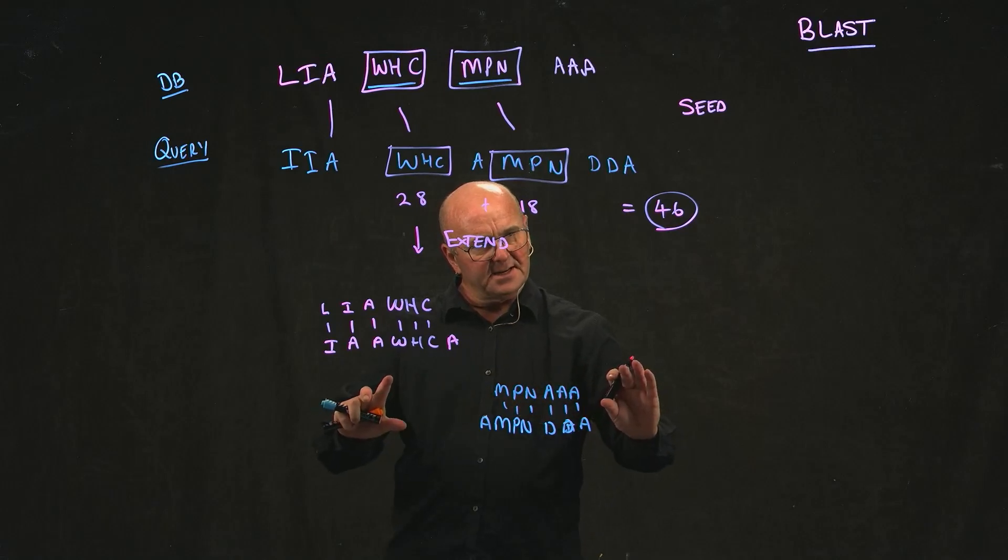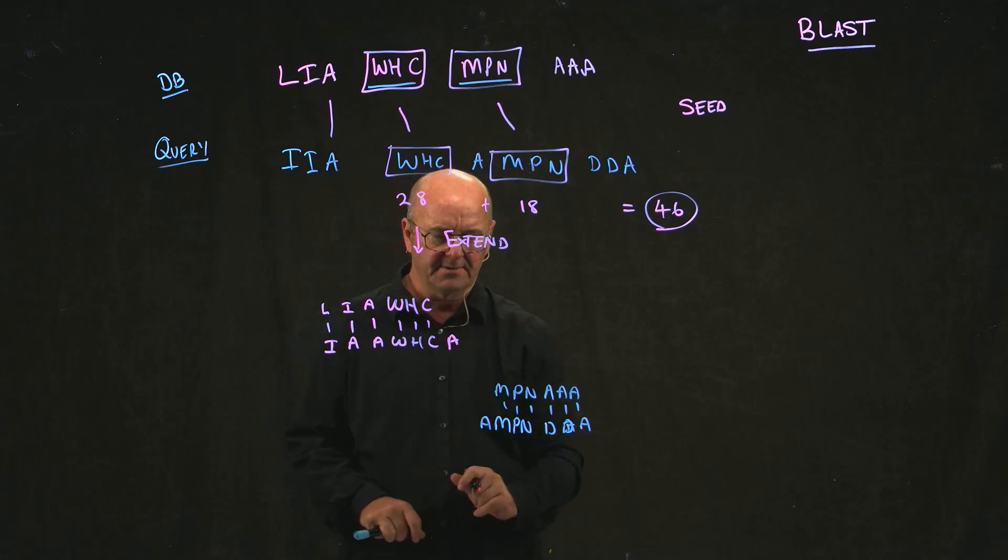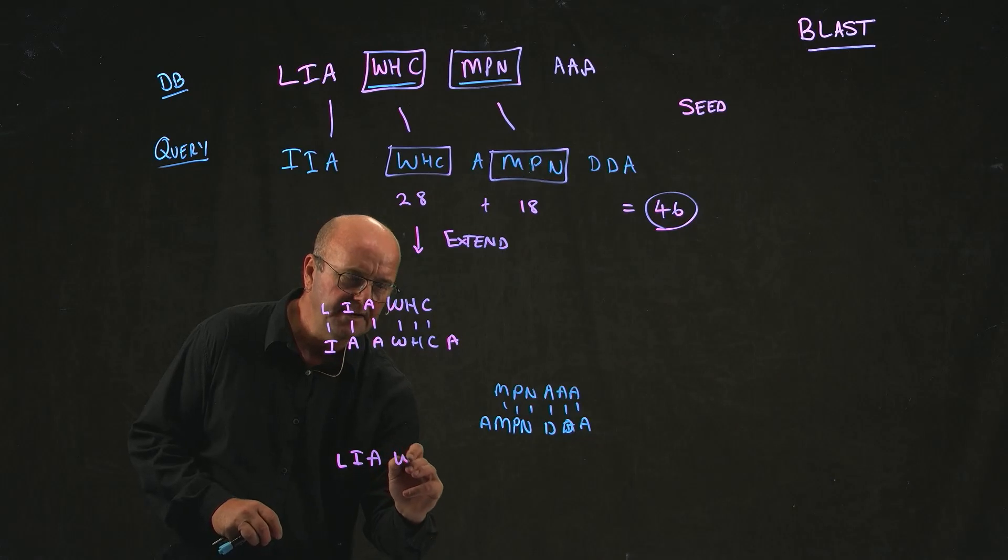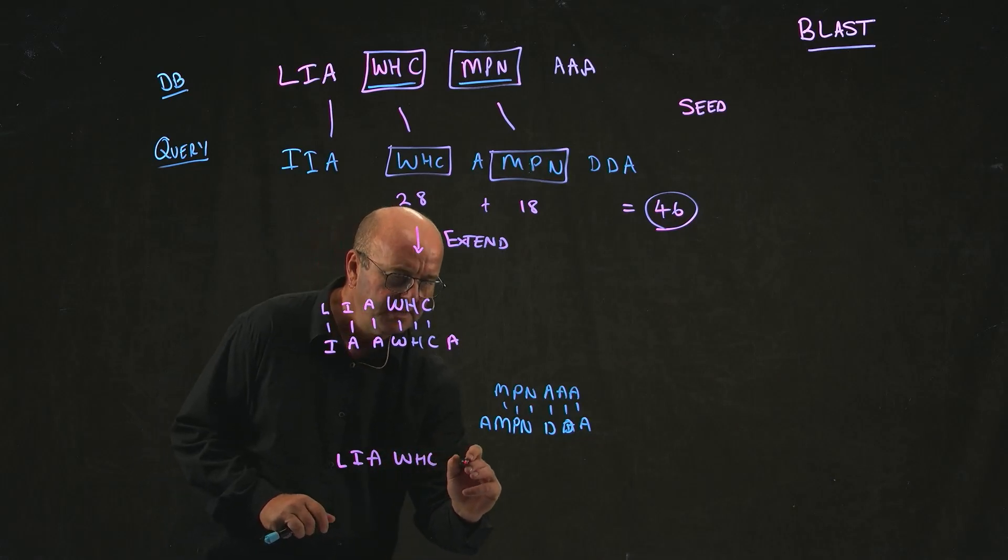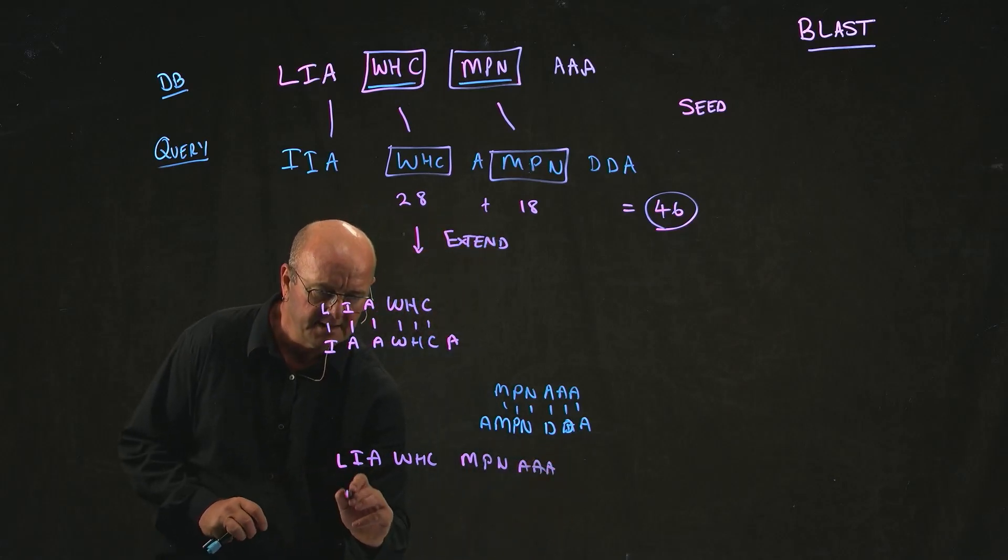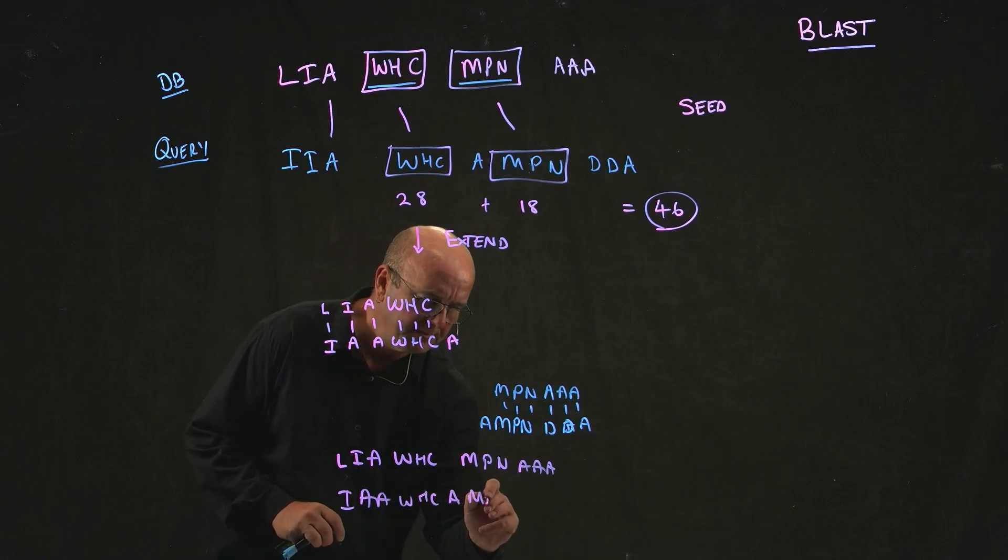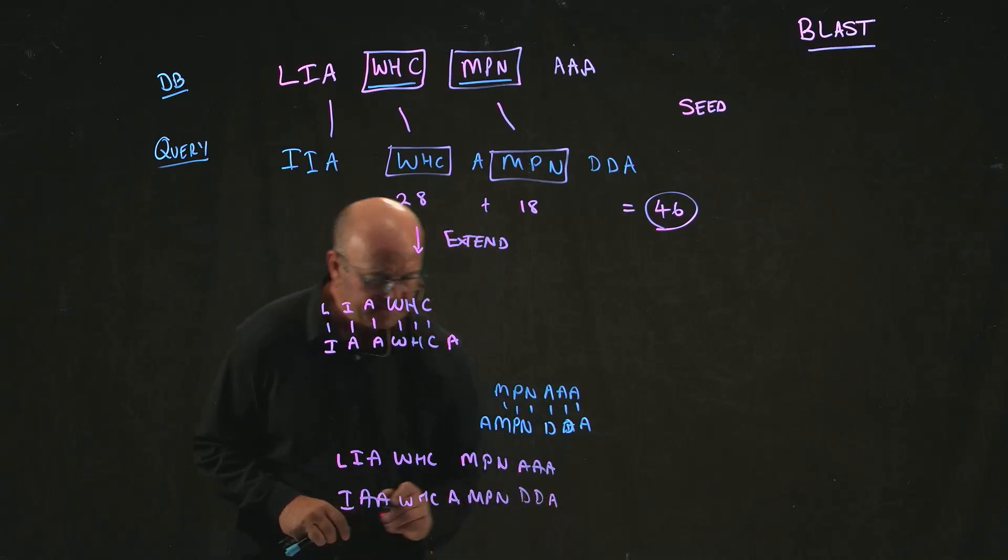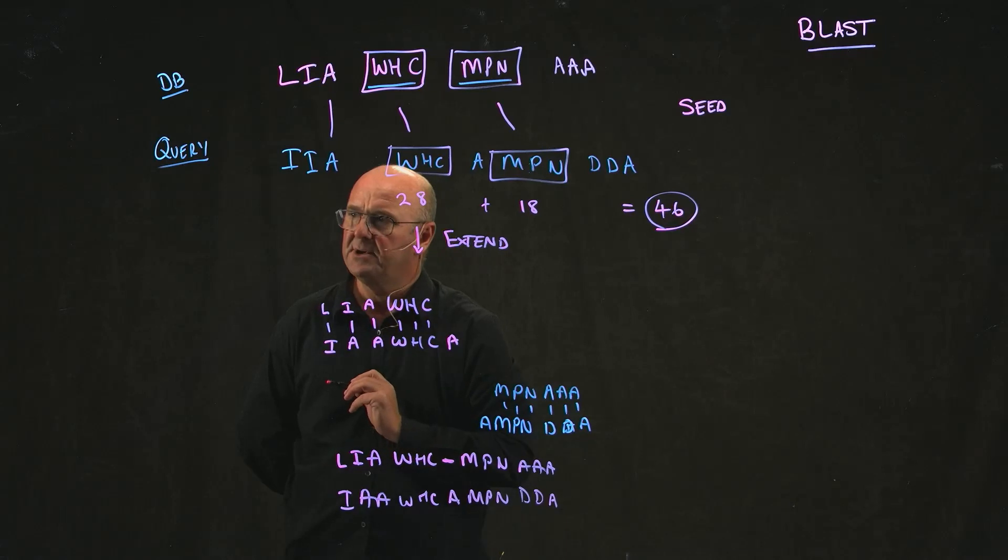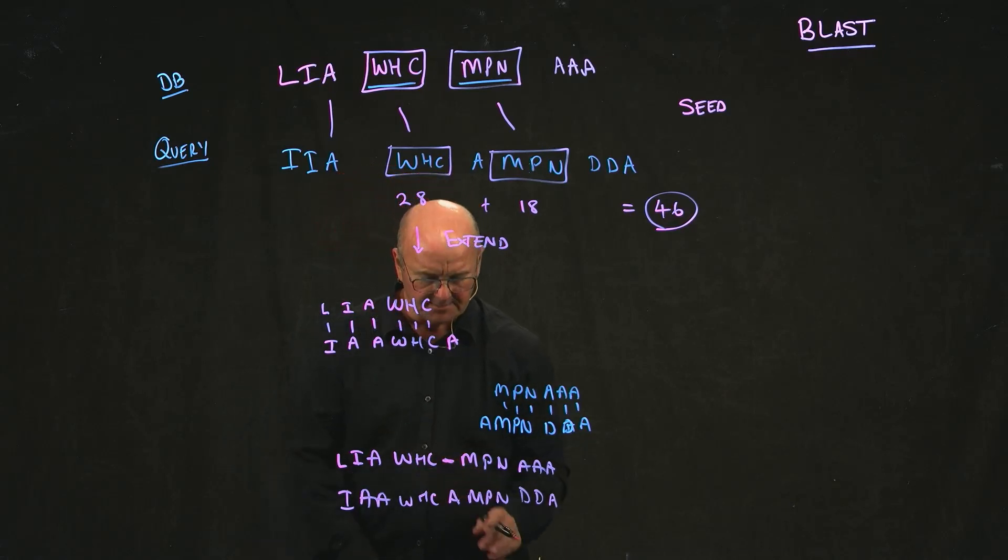Now that we've extended, we can join these two extensions. And say, look, basically, we've got the same thing. And we're going to say our alignment is going to be LIAWHC MPNAAA. And what do we do about this little thing here? We put a little gap there. And we say, this is a gap. And I'll talk about gaps in just one second.